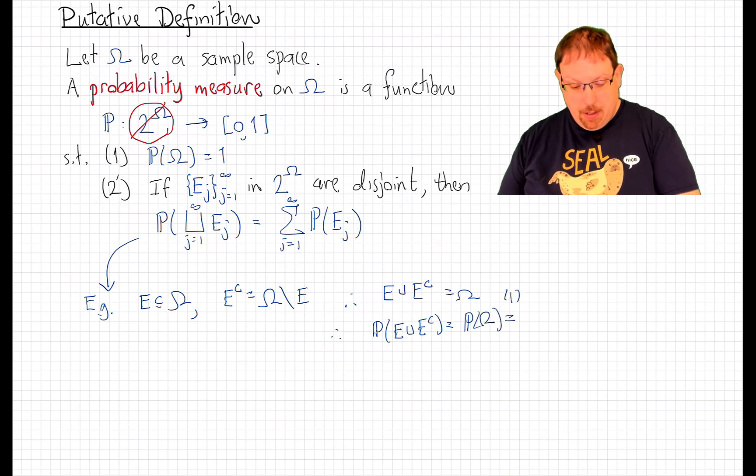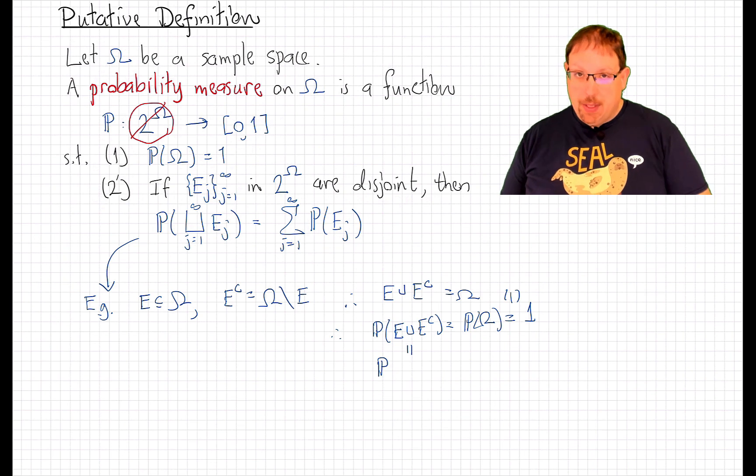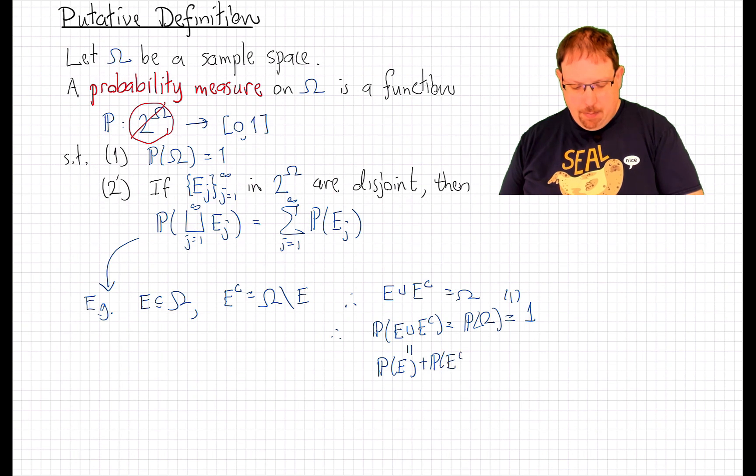which by property 1 is 1. But by countable and therefore finite additivity of probability over disjoint unions, this is the sum of the probability of E and of E complement.